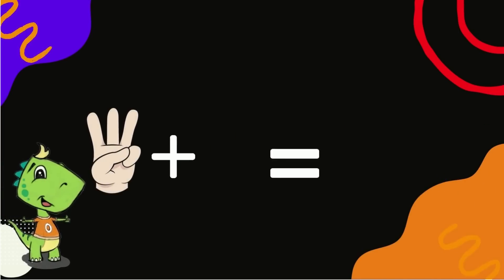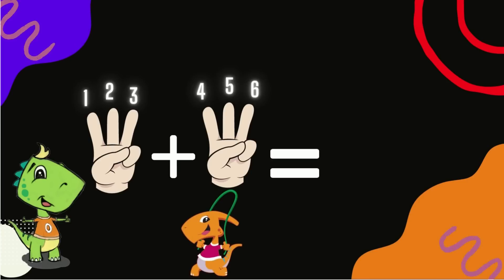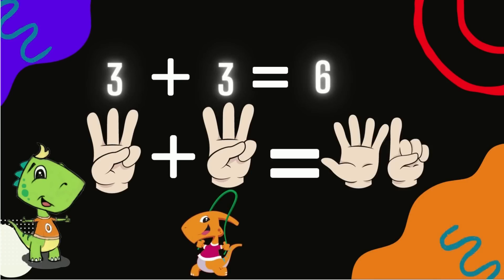Take three fingers out in one hand and three fingers out in the other hand. Let's count. One, two, three. Four, five, six. Three add three equals six.